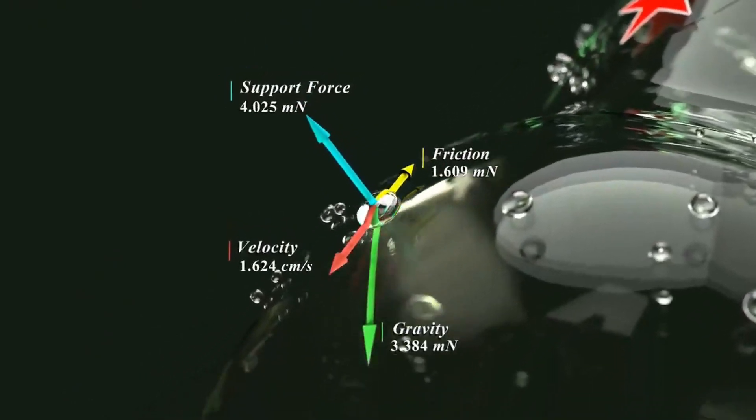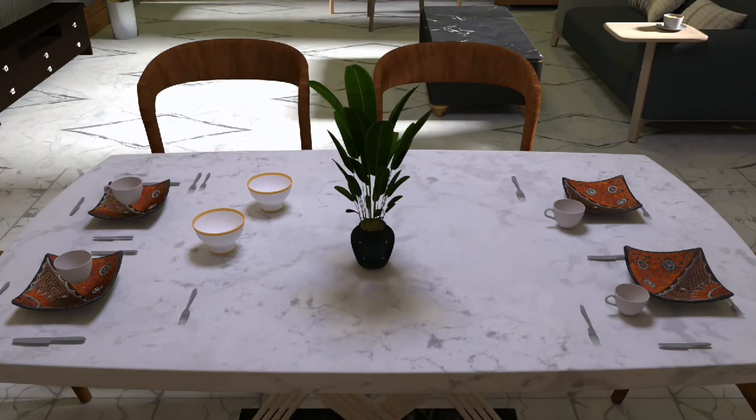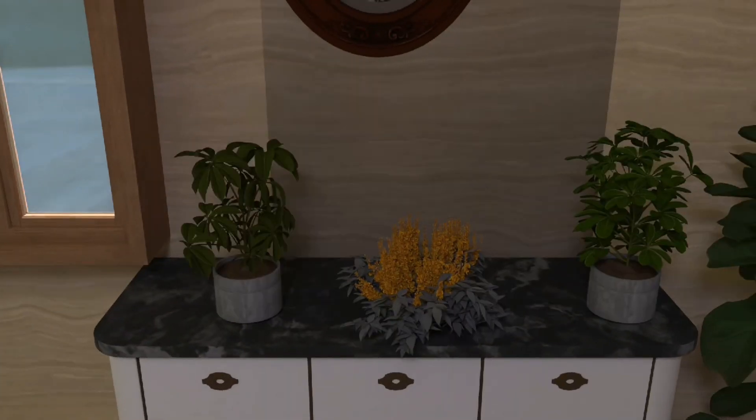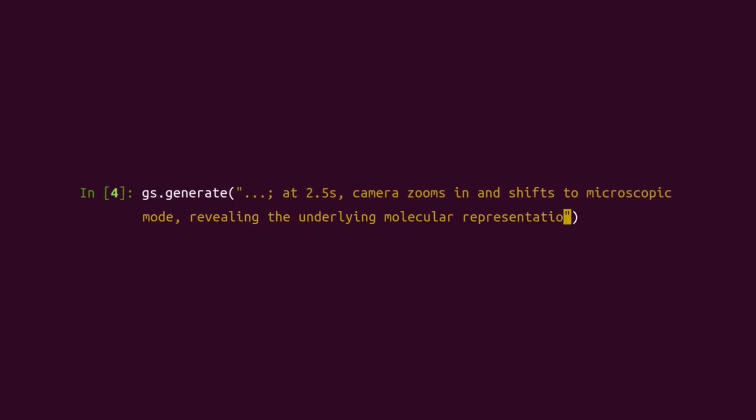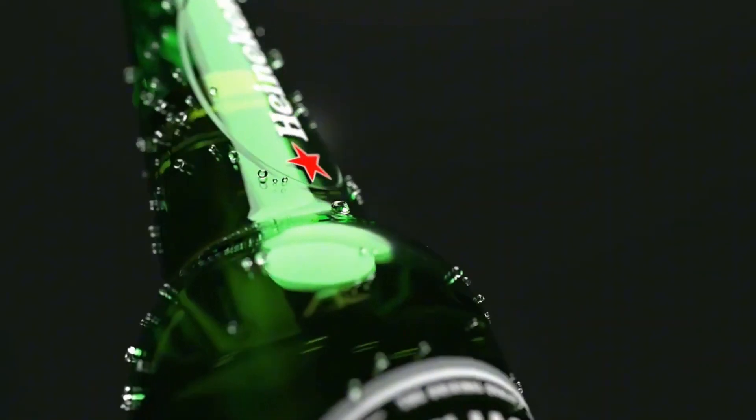For instance, need a 3D scene of a home interior? Genesis can generate it. Want to simulate a quadcopter performing a backflip? Genesis has you covered. Looking for a lifelike robotic motion? It's just a prompt away.